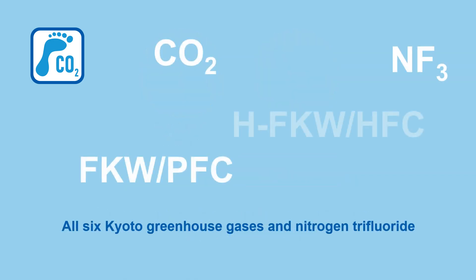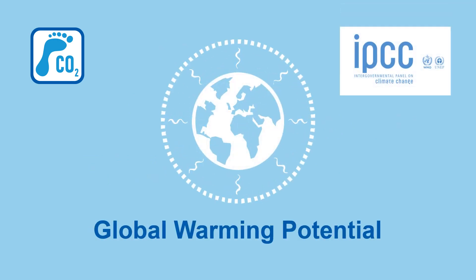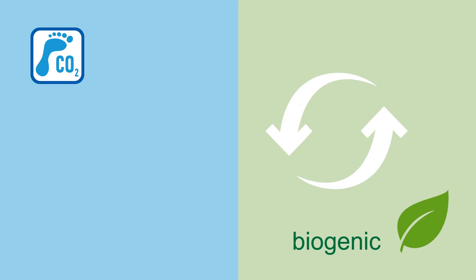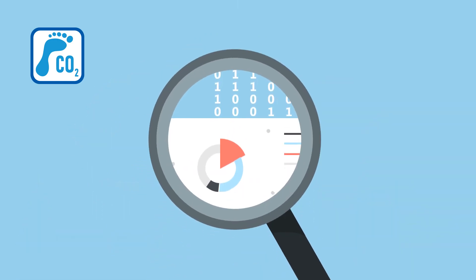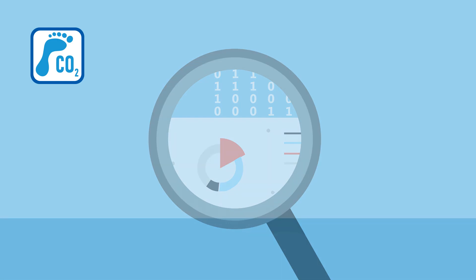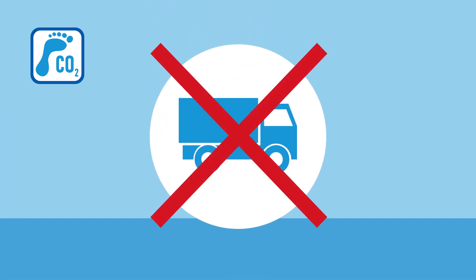Include all six Kyoto greenhouse gases and nitrogen trifluoride. Use GWP 100 factors from the 2013 IPCC 5th Assessment Report. Consider biogenic CO2 assimilation, CO2 removal, and biogenic emissions separately from non-biogenic emissions and removals. Use up-to-date, high-quality, and representative data that reflects the specific geography and technology of the product in question. Refer to one kilogram of the product. Exclude packaging or transport emissions to the BASF site, and also CO2 offsets.